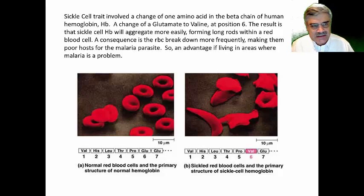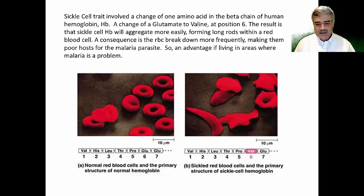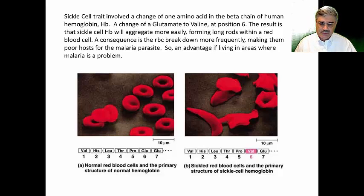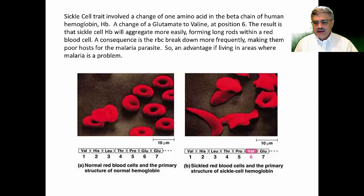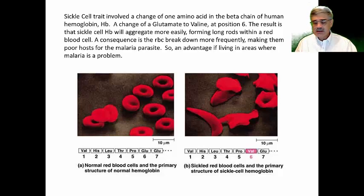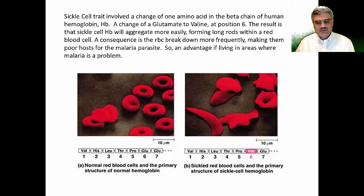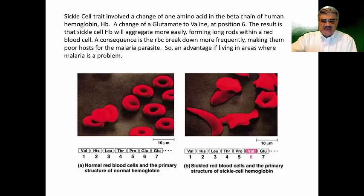Let's talk about sickle cell trait. Sickle cell anemia is a condition due to a genetic mutation — specifically a variation in the amino acid sequence of hemoglobin, the protein in our red blood cells that carries oxygen throughout our bloodstream. Hemoglobin is maybe five or six times larger than cytochrome c. This condition is due to a mutation in a single amino acid at position six, which is converted from a glutamic acid to a valine. That single mutation leads to a significant change in the properties of hemoglobin.